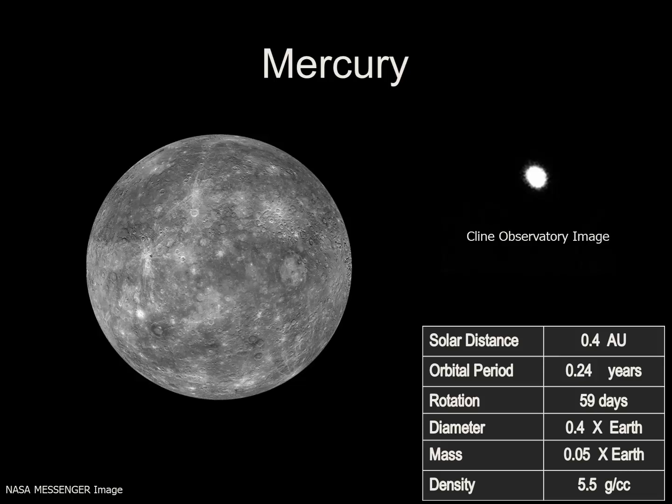It rotates once every 59 days. There are three rotations for every two orbits of the Sun. Mercury's diameter is 40% that of the Earth, and its mass is only 5% of Earth's mass, giving it a density of 5.5 grams per cubic centimeter. Mercury has no significant atmosphere, which means it has dramatic changes in surface temperature. It may be as hot as 800 Fahrenheit in the day and get down to negative 290 at night, giving an average of around 330 degrees Fahrenheit.